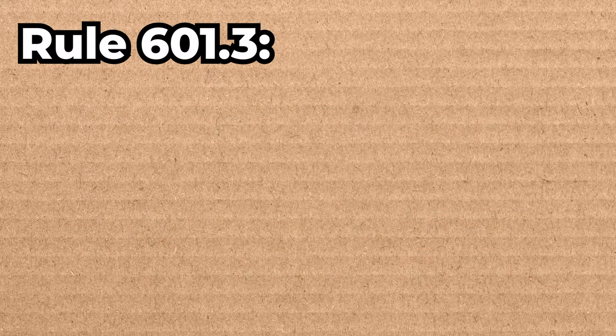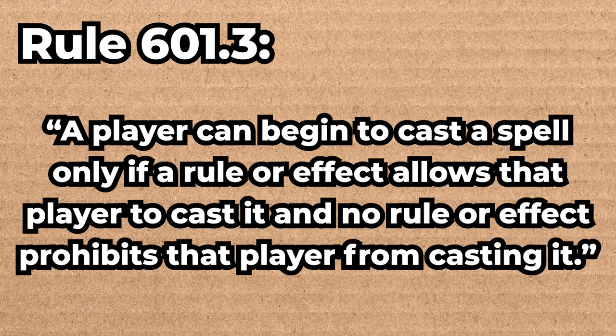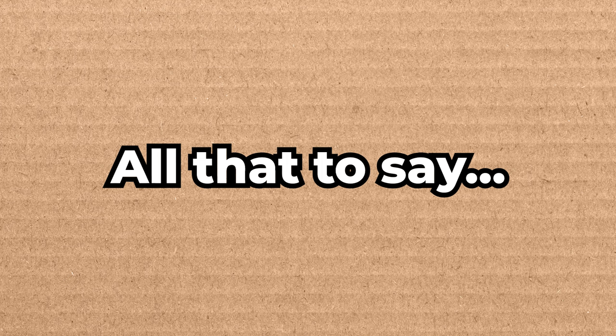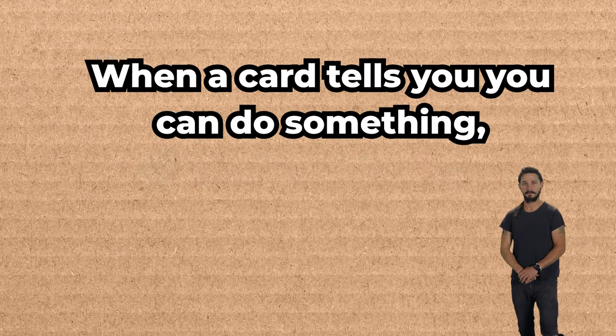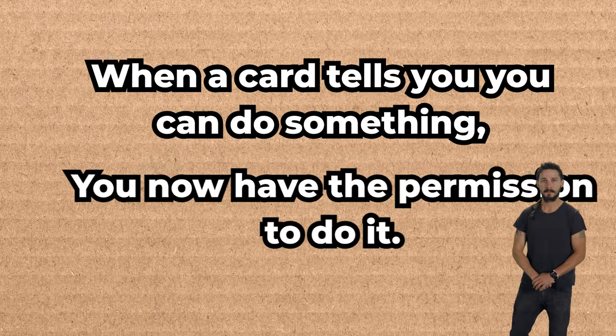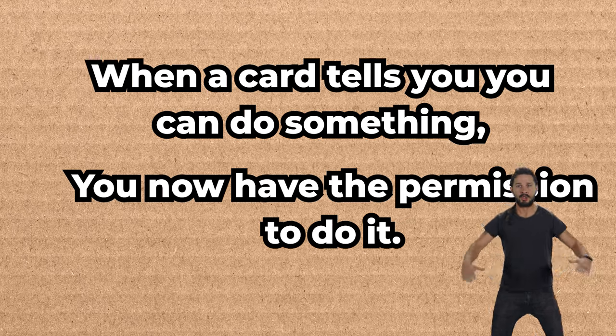Rule 601.3 says a player can begin to cast a spell only if a rule or an effect allows that player to cast it, and no rule or effect prohibits that player from casting it. Effectively, all this means is that when a card tells you you can do something, you now have the permission to do it.